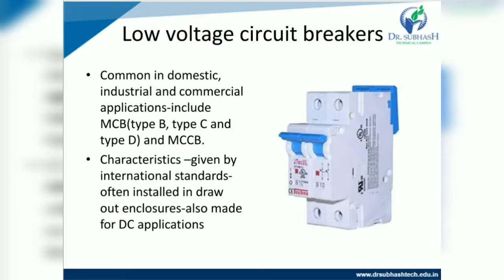The first type is the low voltage circuit breaker, which we commonly see in domestic applications. It is common in domestic, industrial, and commercial applications, including MCB types B, C, and D, and MCCB. This is the real picture of a low voltage circuit breaker, given by international standards. It is often installed in draw-out enclosures and is also made for DC applications. It is the basic low voltage circuit breaker used for domestic purposes, preventing faults in domestic appliances.